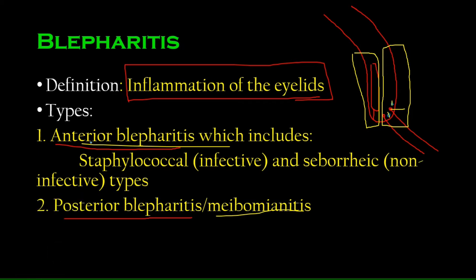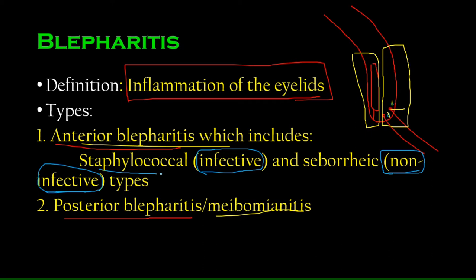Anterior blepharitis is divided into two types: infective and non-infective. The infective type involves a microorganism infecting the glands of Zeis, glands of Moll, or the hair follicle. This is usually caused by Staphylococcus aureus, giving it the name staphylococcal blepharitis. There is also seborrheic blepharitis, which we will compare in the next section.